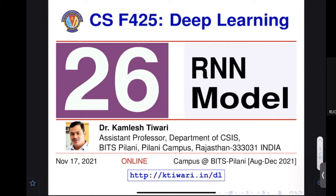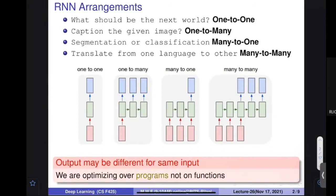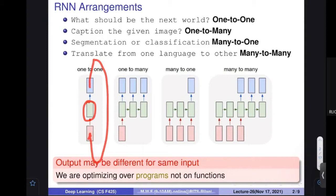I will quickly go back one slide to what we have done in the last class. We have seen that the RNN architecture discussed in the last class is going to be this box. Sometimes it may happen that I provide something and get some output, and I feed that output back to the system to get one more output, and I keep doing this until I get some meaningful output.